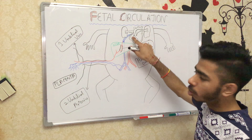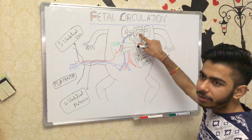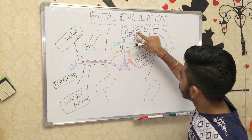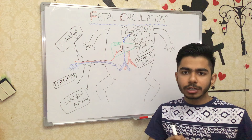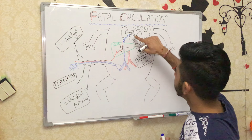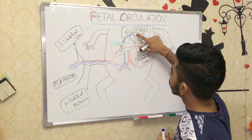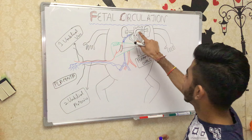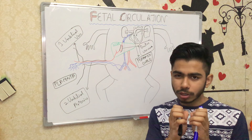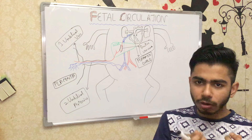Blood reaching the left atrium via the foramen ovale goes into the left ventricle through the bicuspid or mitral valve, then into the aorta, which supplies the fetal body. Meanwhile, whatever blood does enter the right ventricle goes into the pulmonary artery toward the lungs. However, because the lungs are not functioning in the fetus, these pulmonary arteries are highly constricted and allow very little blood through.